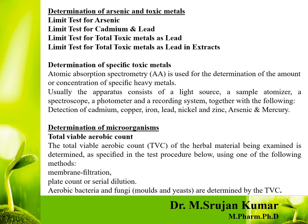Determination of specific toxic metals can be done with atomic absorption spectrometry. This instrument consists of a light source, a sample atomizer to atomize the sample — which is the basic principle of atomic absorption spectrometry — a spectroscope, a photometer, and a recording system. Atomic absorption spectrometry is used for detection of specific toxic metals like cadmium, copper, iron, lead, nickel, zinc, arsenic, and mercury. It is the most reliable and accurate method, with reproducible results.